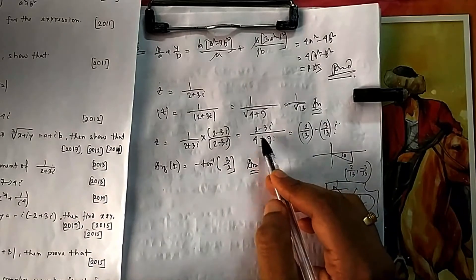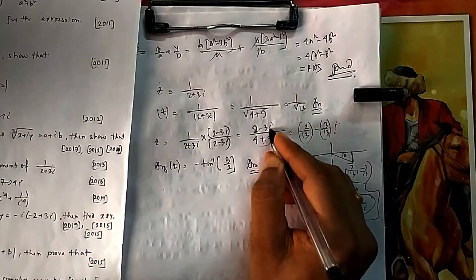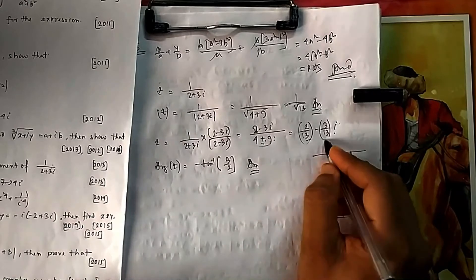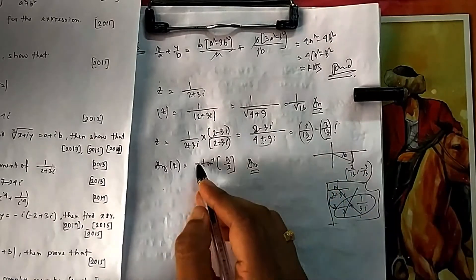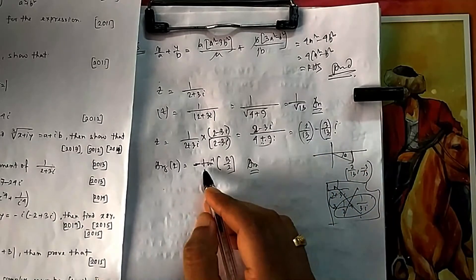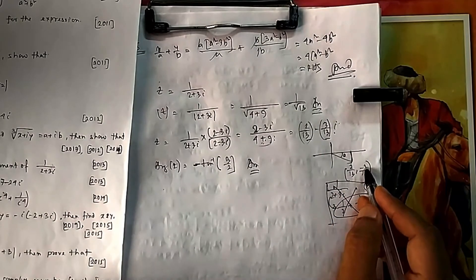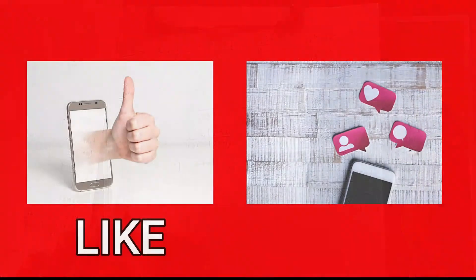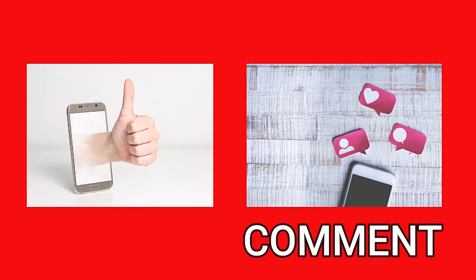Once the denominator is real, you can split the numerator: real part is 2/(denominator) and imaginary part is −3i/(denominator). Since the real part is positive and imaginary part is negative, the number lies in the fourth quadrant, so the argument is −tan⁻¹(3/2).